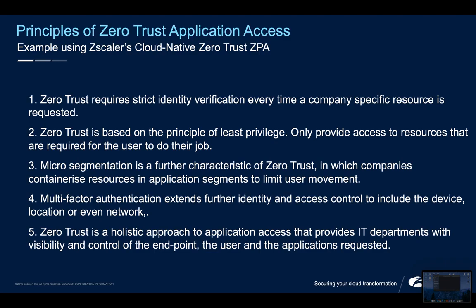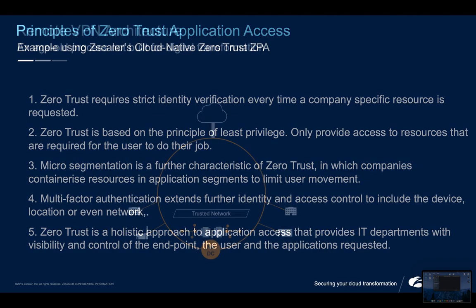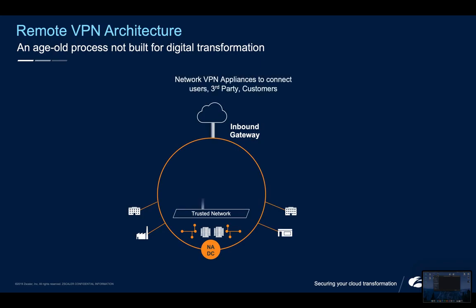Zero Trust is a holistic approach to application access that provides IT departments with far more visibility and control of the endpoint, the user, and the applications requested. To understand how far we've come and why Zero Trust is very different, let's look at the process of connecting users to networks using a 20-year-old process which is essentially the remote VPN.